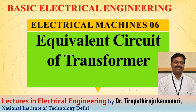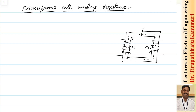Today we are going to discuss transformer with winding resistance, followed by the equivalent circuit of a transformer - what will be the equivalent circuit referred to the primary and secondary side, and what will be the phasor diagram of a practical transformer. Till the last class we have removed, one by one, the assumptions taken for the case of the ideal transformer, including the magnetizing component of current.